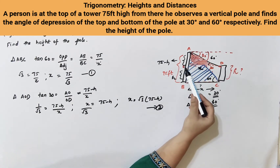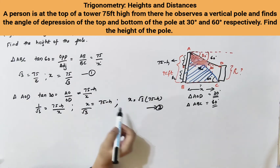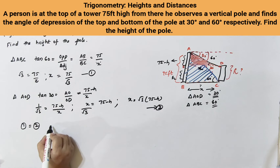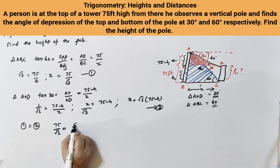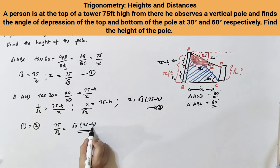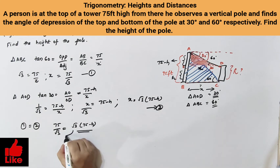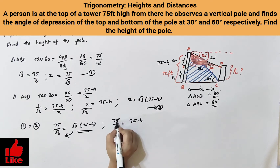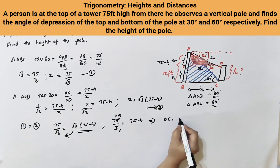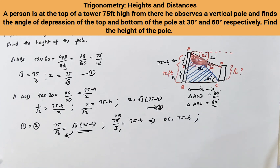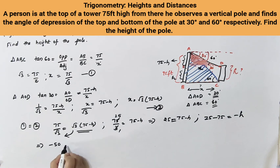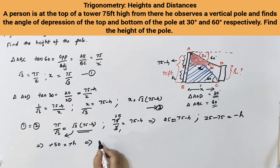Now from Equations 1 and 2, X which is BC and OD are the same, meaning the left-hand sides are equal, so the right-hand sides must also be equal. Therefore 75 over root 3 equals root 3 times (75 minus H). Taking root 3 to the left side gives 75 over 3 equals 75 minus H. Simplifying, 25 equals 75 minus H, so 25 minus 75 equals minus H, giving minus 50 equals minus H. Therefore H equals 50 feet. This is the height of the pole.